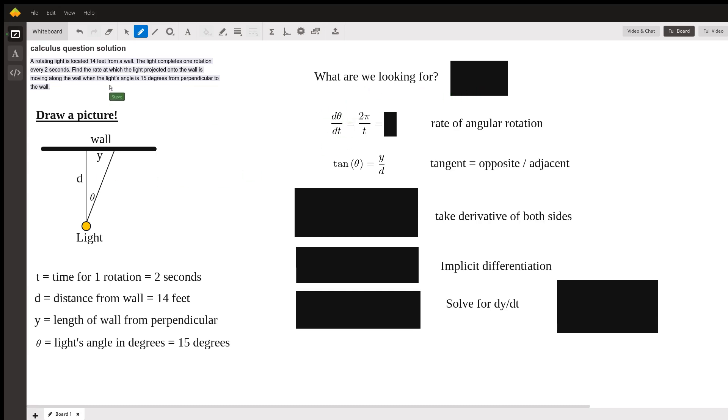Find the rate at which the light projected on the wall is moving along the wall. So it's really a change of y with respect to time. It's going to be dy by dt, that's one thing, that's what we're looking for, that's our goal.